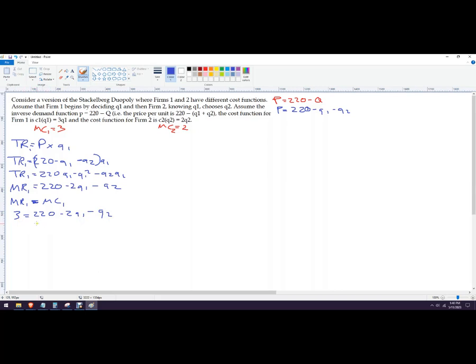Do a little bit of rearranging. I get 217 equals 2Q1 minus Q2. Q1 equals half of that. Divide through by 2 is what we're doing here, so 108.5 minus 0.5 Q2. And this is the reaction function for firm 1.